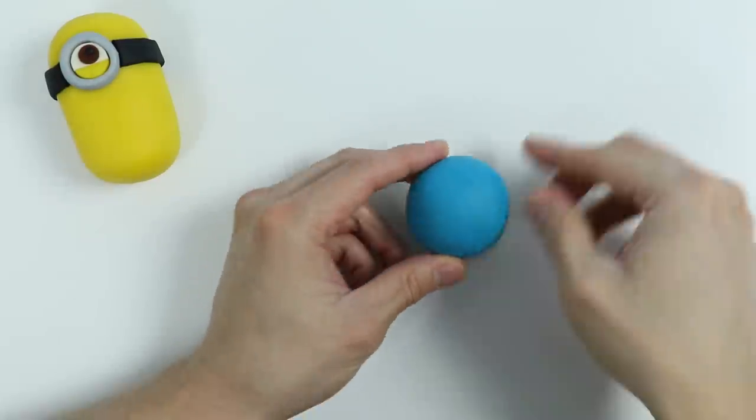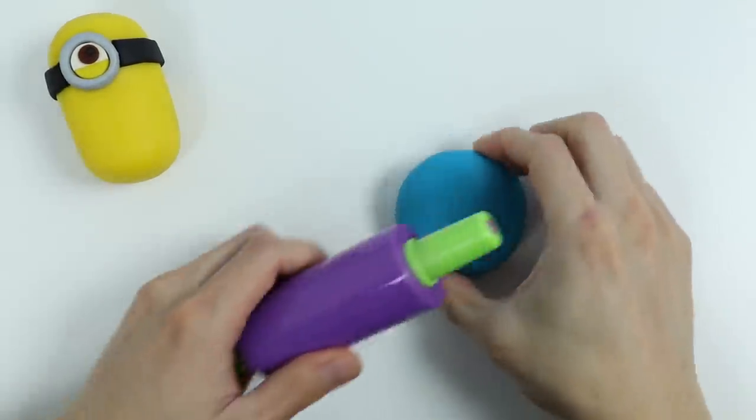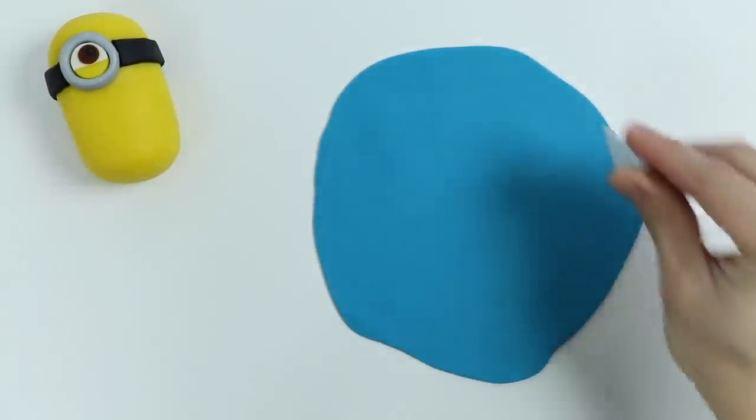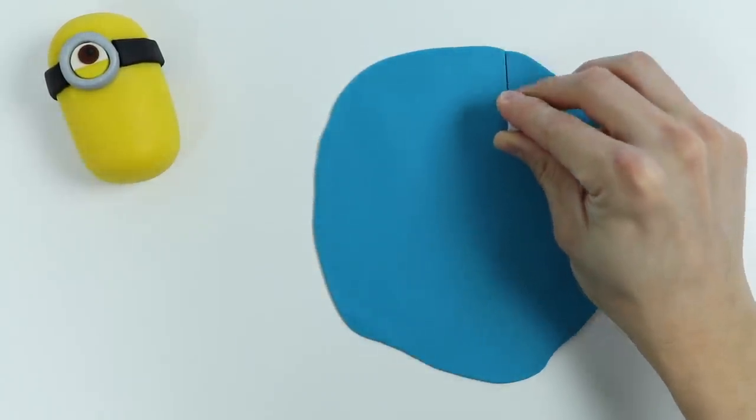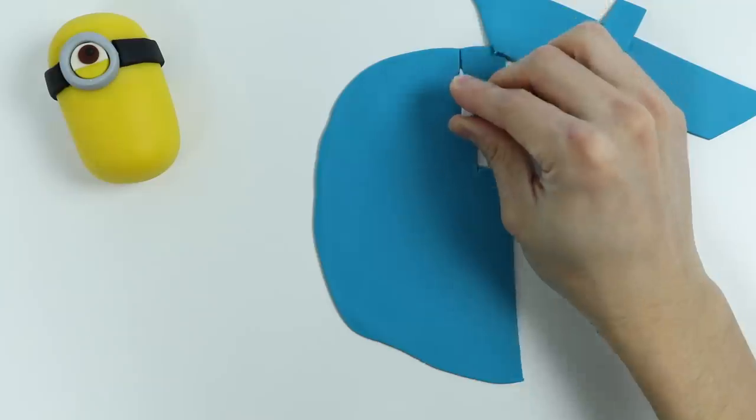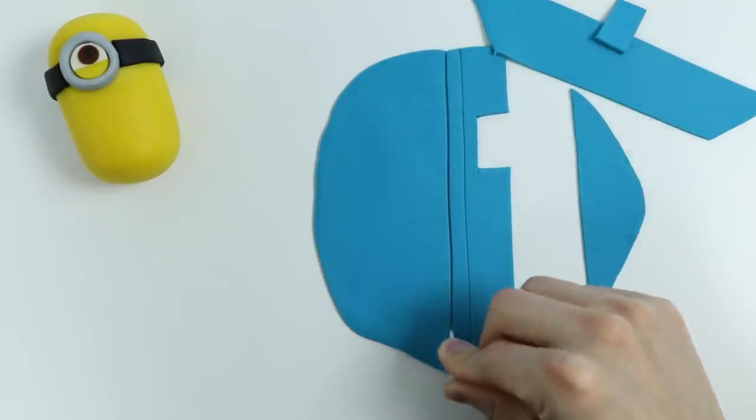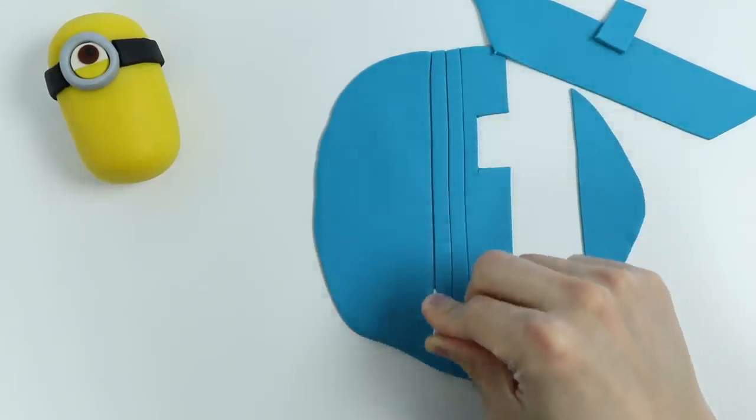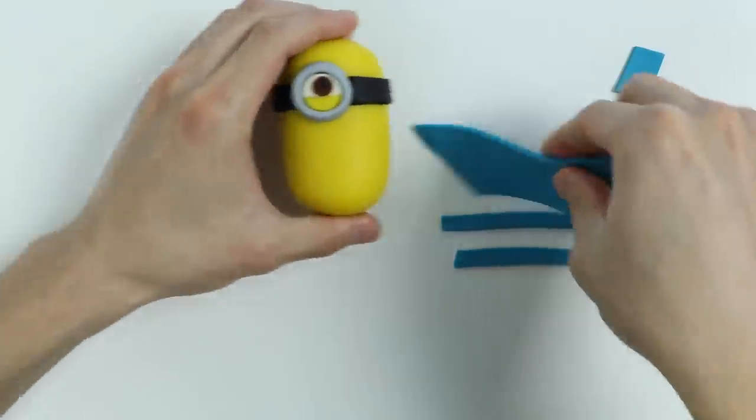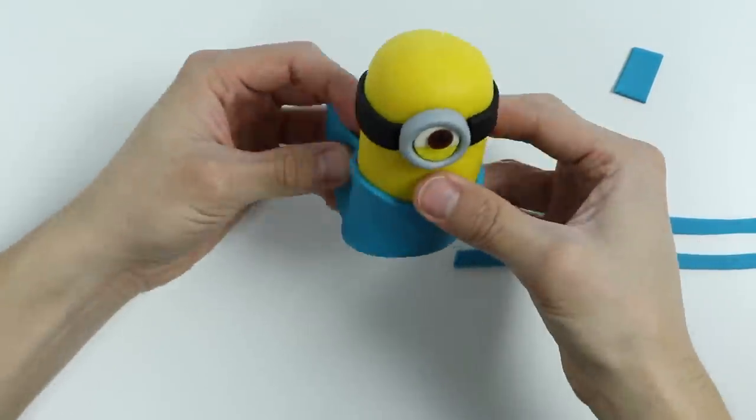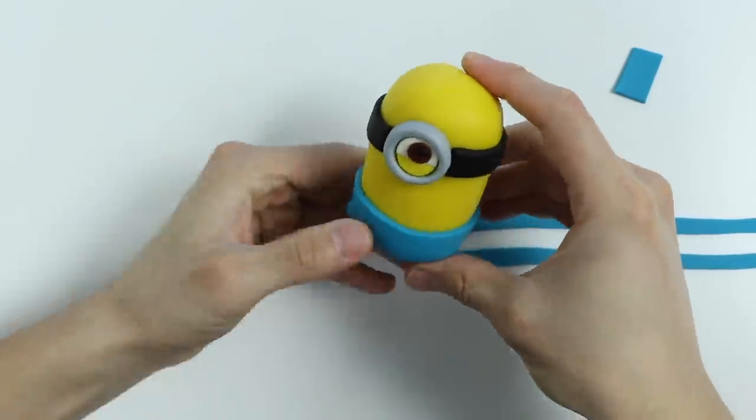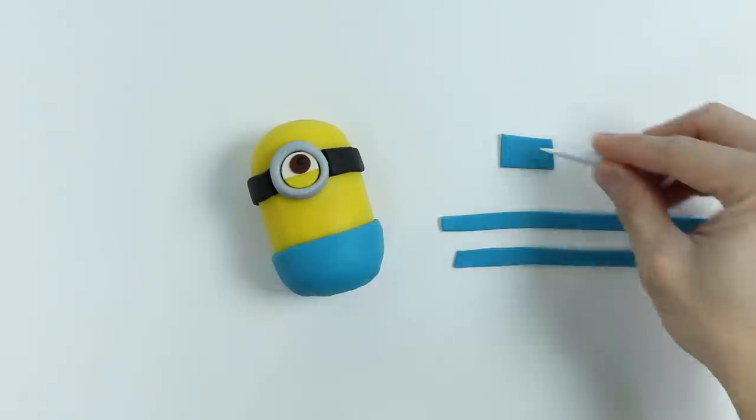Now let's make Stewart's outfit. Roll out some blue Play-Doh. Give me a minute while I make a few shapes. Now let's design his overall. Let's wrap this big piece around the bottom part of his body. There we go! Now let's cut this in half.